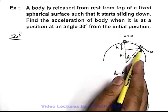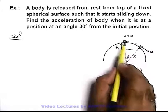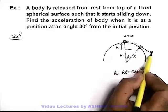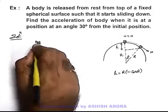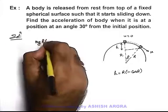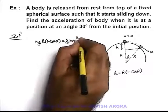And by work energy equation, we can say that whatever work is done by gravity in moving the body from this point to this point, that will be the gain in kinetic energy. So here we can write mgh, that is mgr(1 - cos theta) equals to (1/2)mv^2.